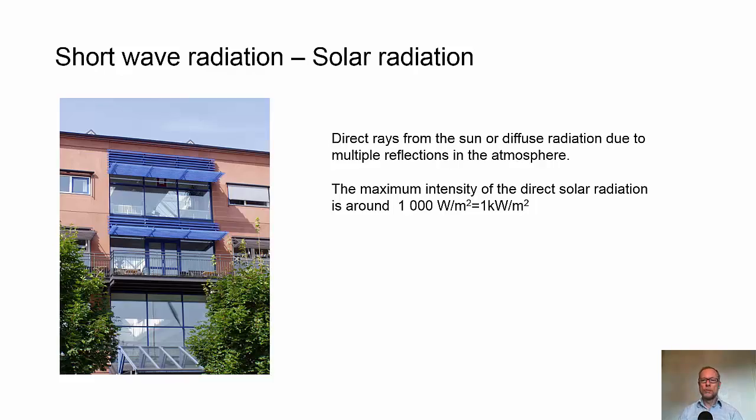Then we have the short wave radiation, or we call it also solar radiation. It contains the direct rays from the sun or diffuse radiation due to multiple reflections in the atmosphere, and the maximum intensity is roughly 1,000 watt per square meter, or 1 kilowatt per square meter.